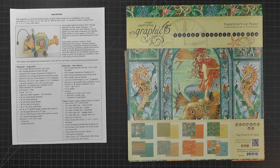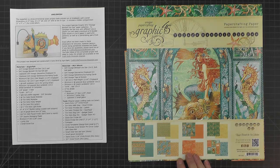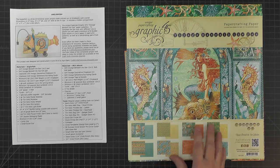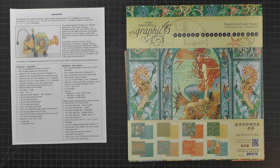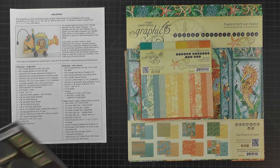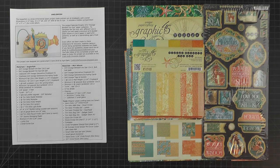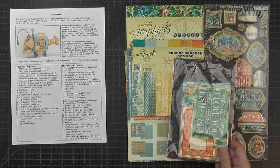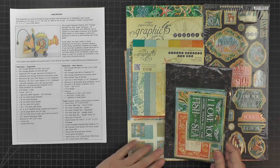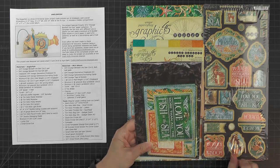When I built this version, I used the Graphic 45 Voyage Beneath the Sea paper collection. For the anglerfish itself I used papers from the 12 by 12 pad and the 6 by 6 pad. I also used one tiny thing from the decorative chipboard.